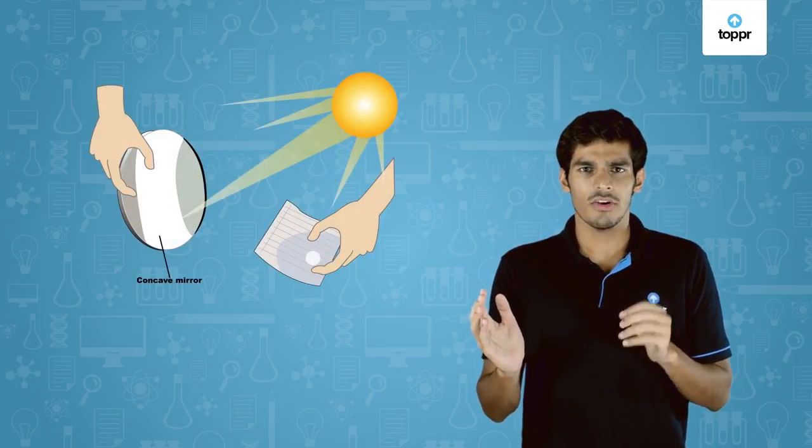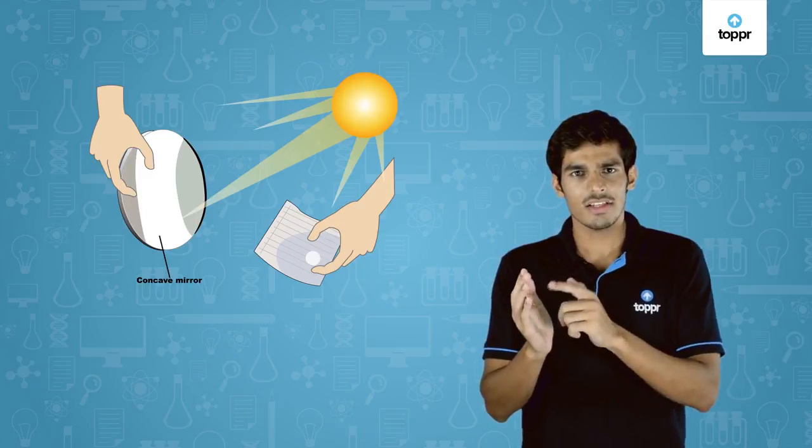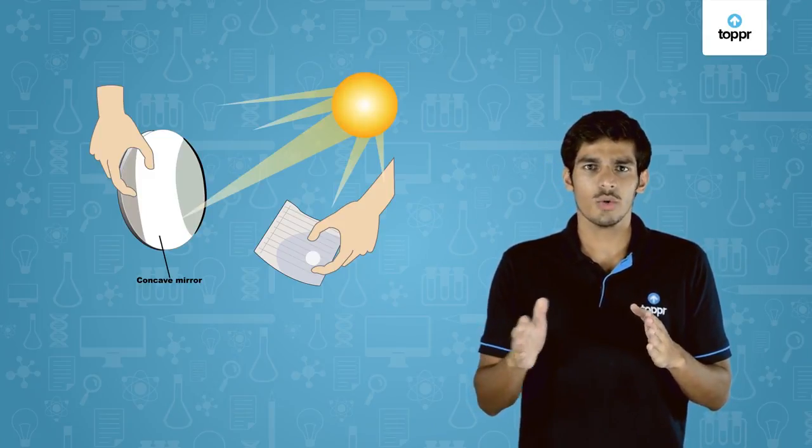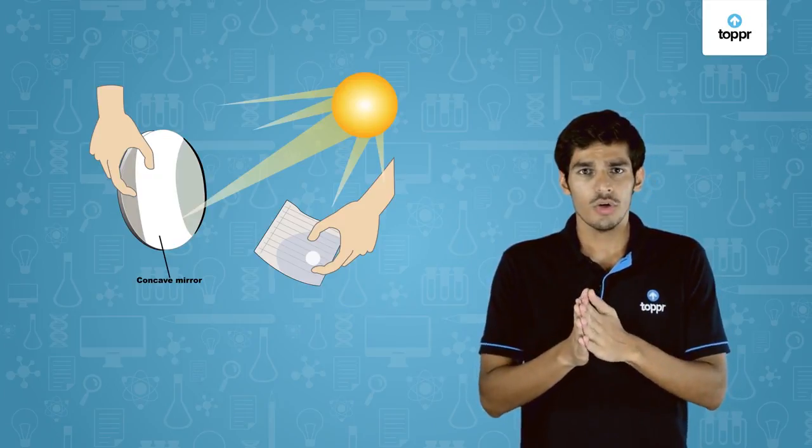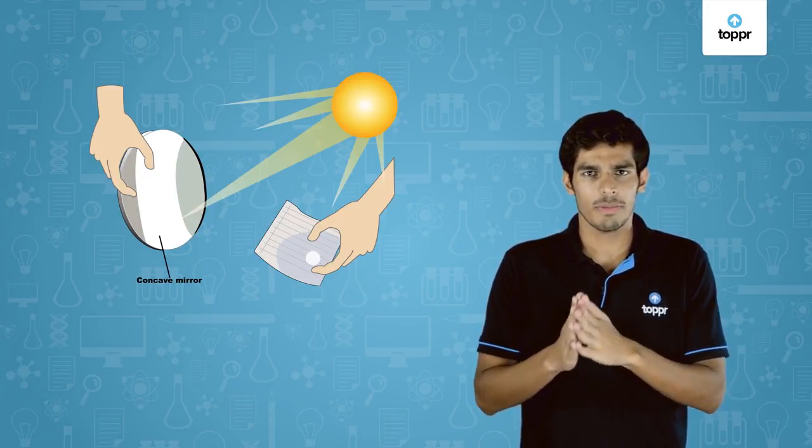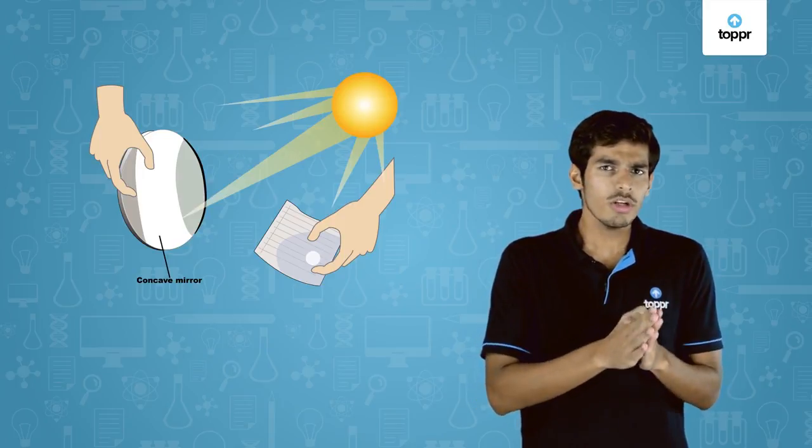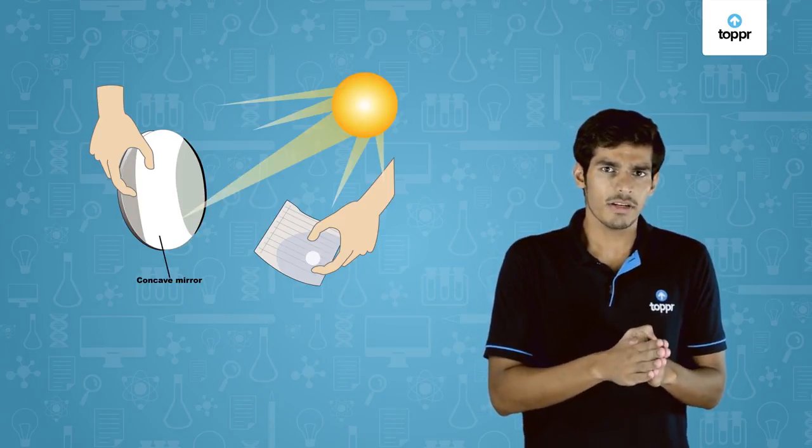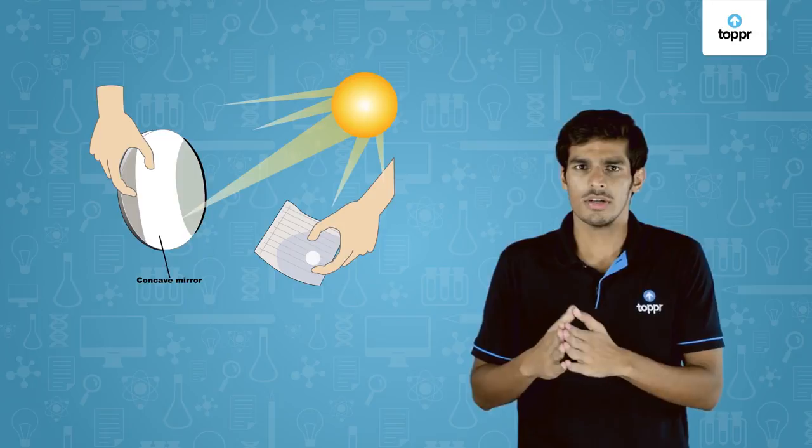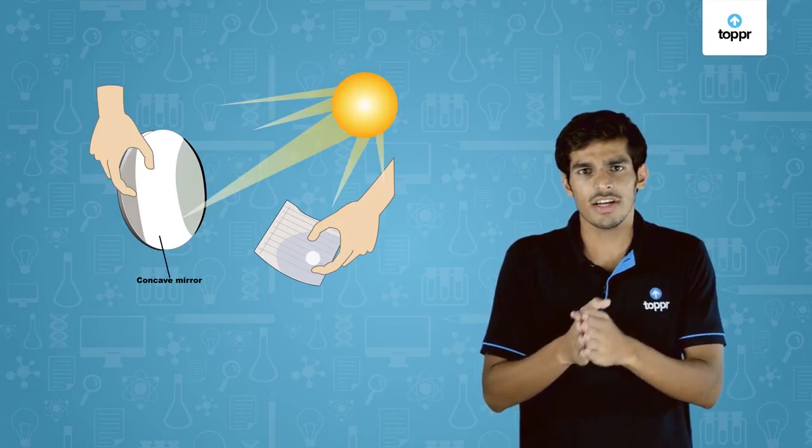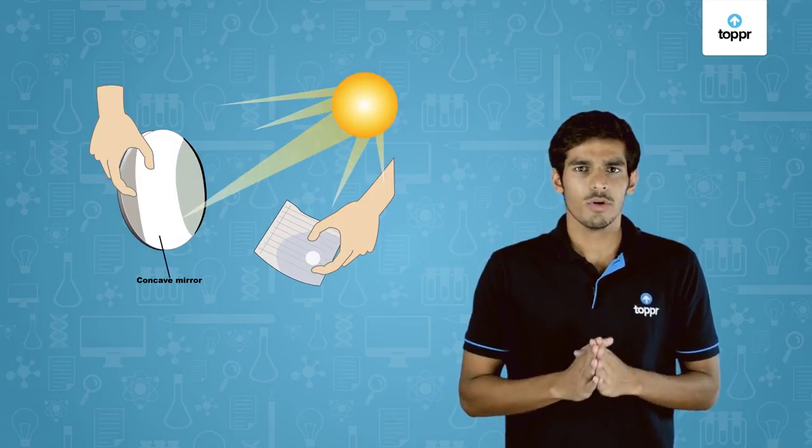Hold a concave mirror in your hand and point its reflecting surface towards the sun. Direct the reflected light towards a sheet of paper. Move the paper back and forth until you receive a bright spot on the paper. Now, just hold the paper and the mirror in the same position for a few minutes. What do you observe? Initially, the paper starts to produce burning smoke and if you keep it a little longer, it may even catch fire. What causes the paper to burn?